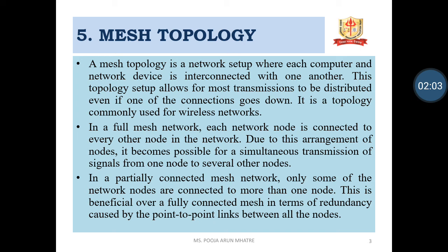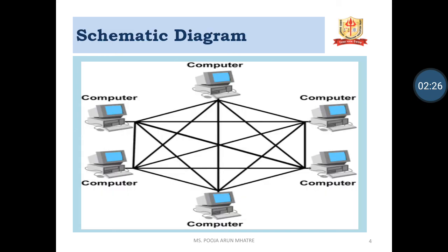Many cables are required for mesh topology. Using the formula, for a network of 1000 nodes, we need 1000 × 999 ÷ 2, that means 4,99,500 cables or links. So this topology is suitable only for small networks. This figure shows the schematic diagram of the mesh topology. Here we can see that all computers are connected with each other — each and every computer is connected with every other node.